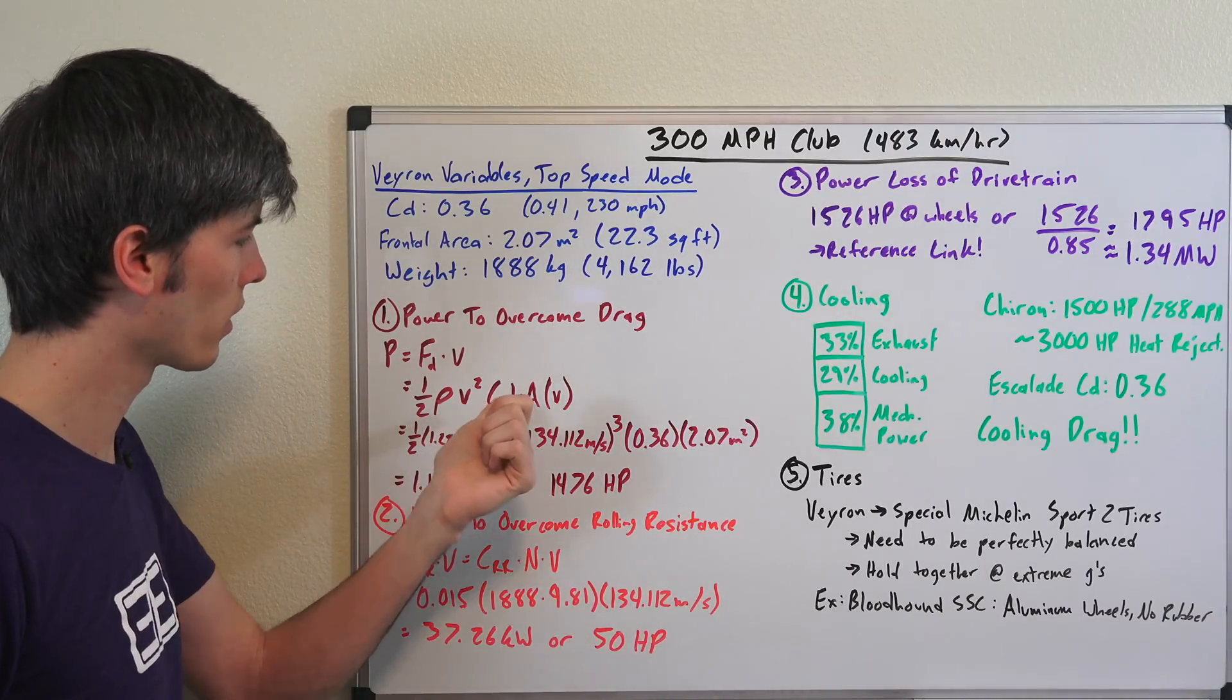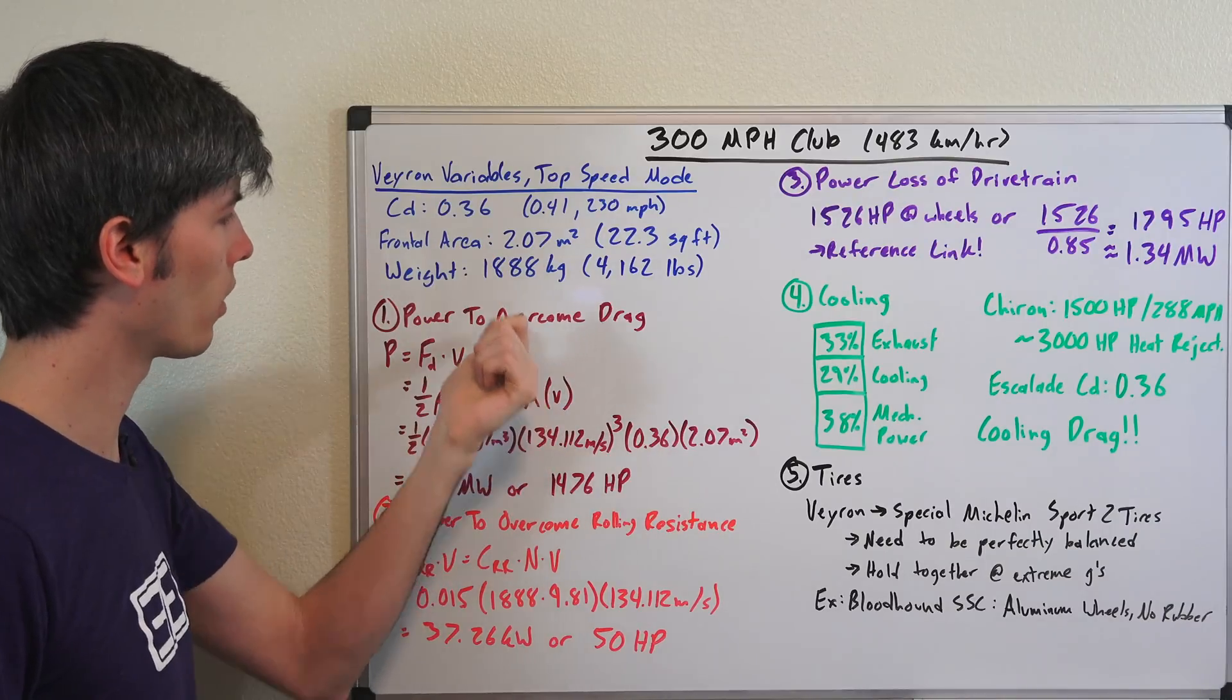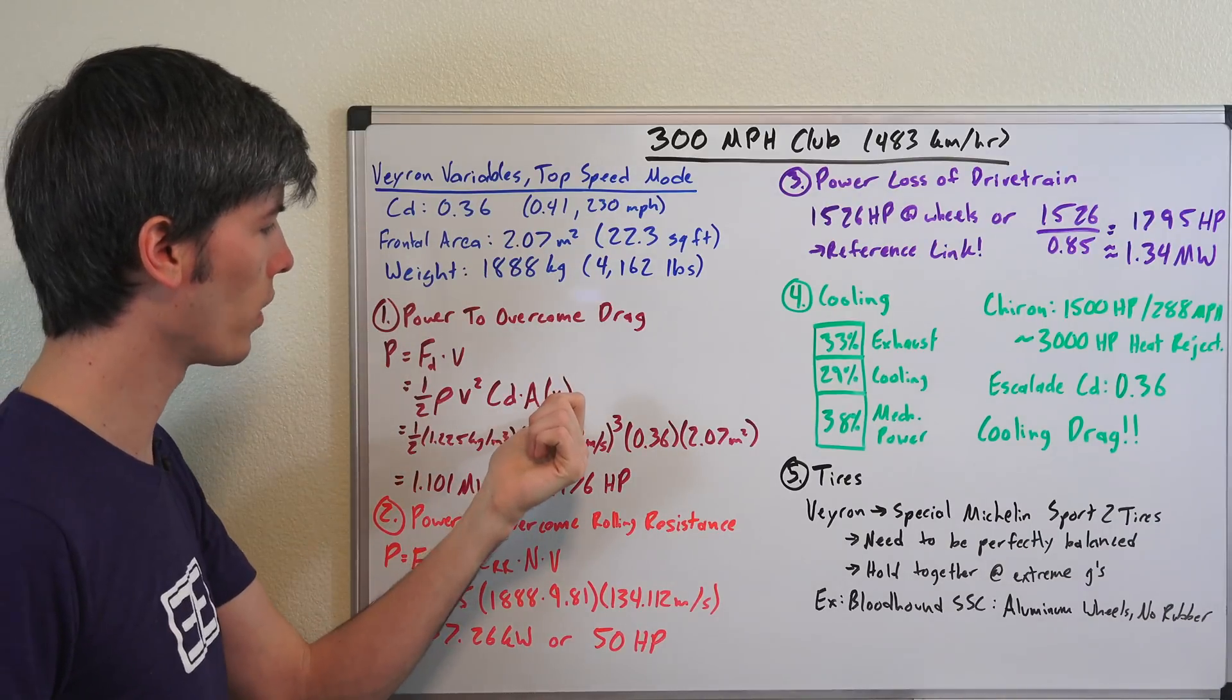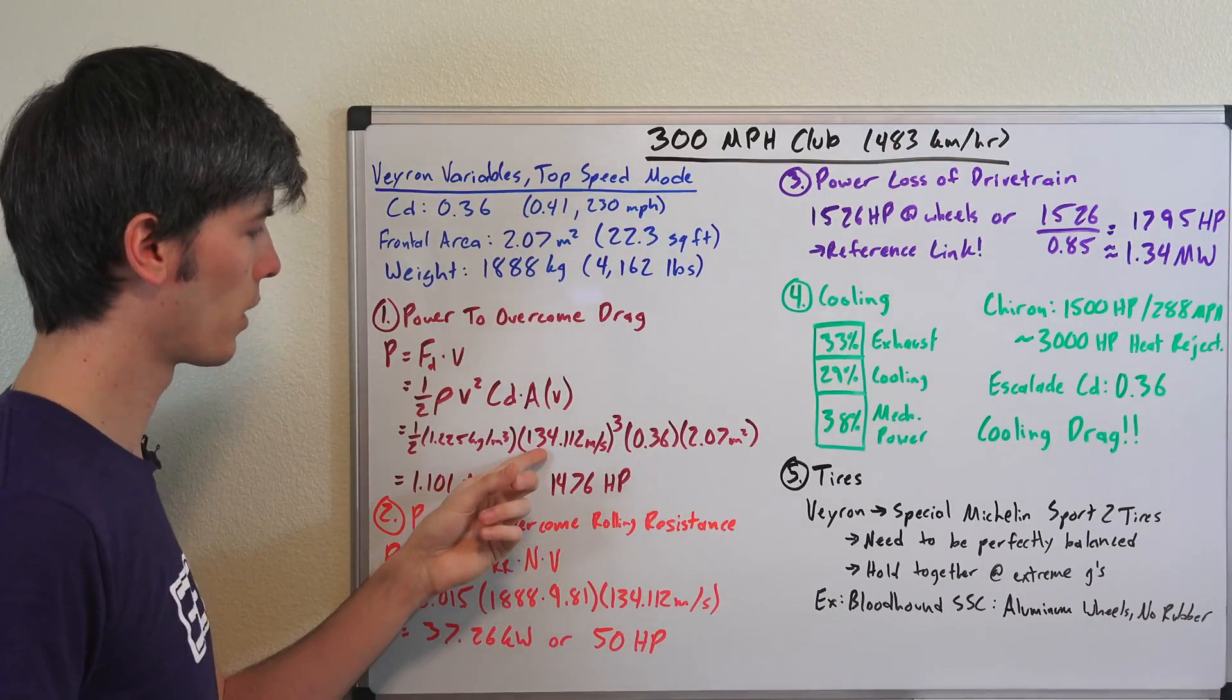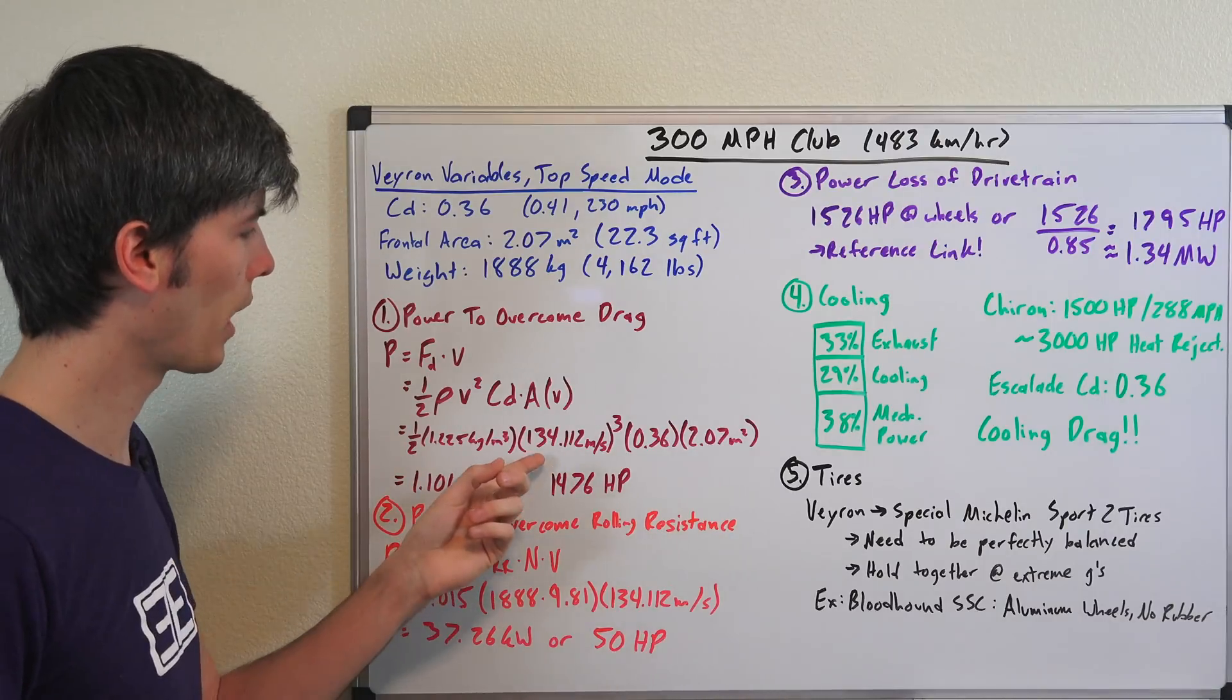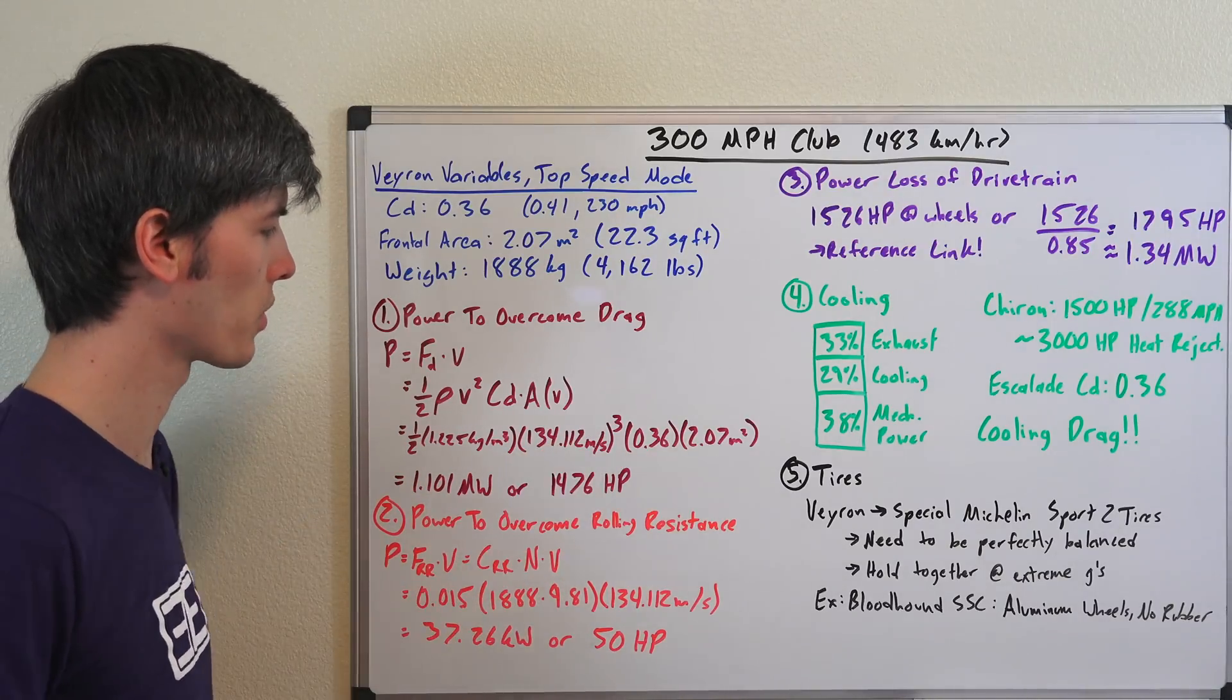Multiply that by velocity squared times our drag coefficient 0.36 multiply that by our frontal area and then multiply that once again by velocity. So I've changed the velocity here from miles per hour or from kilometers per hour to 134.112 meters per second.